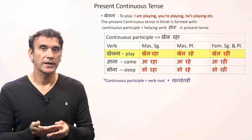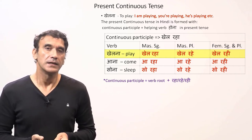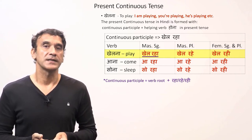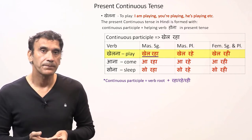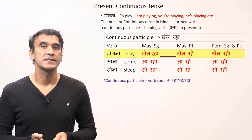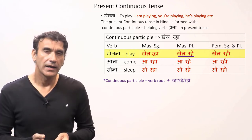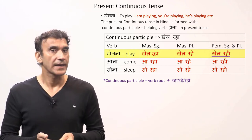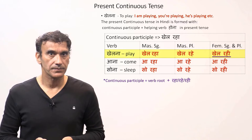The masculine plural form is 'rahe', and the feminine singular and plural forms are 'rahi'. Let's take the verb 'khelna' (to play). The masculine singular continuous participle is 'khelraha', the masculine plural form is 'khelrahe', and the feminine singular and plural form is 'khelrahi'.